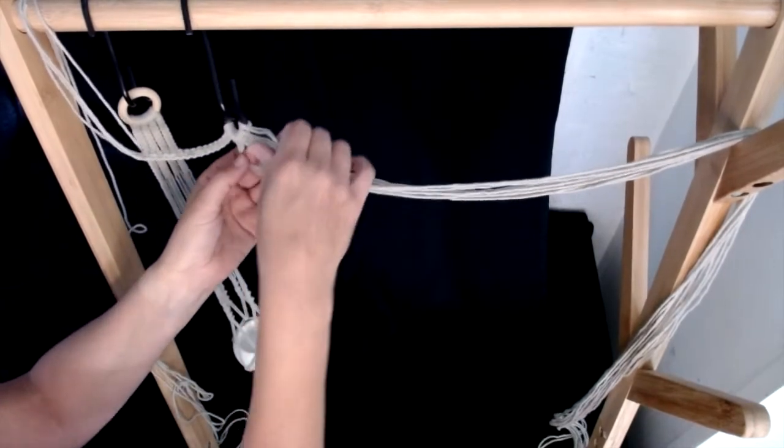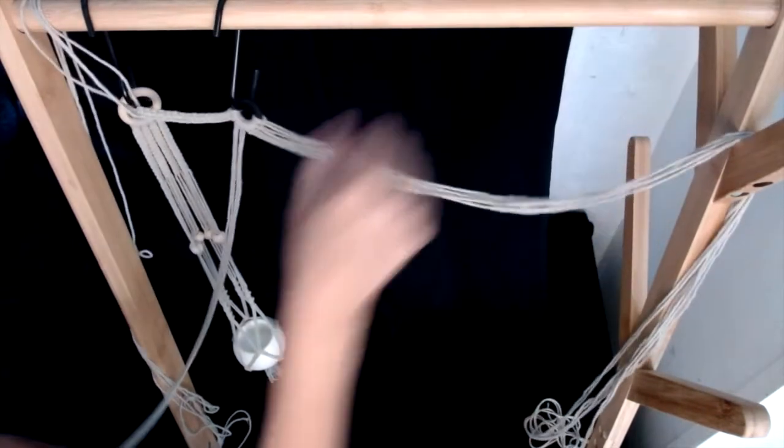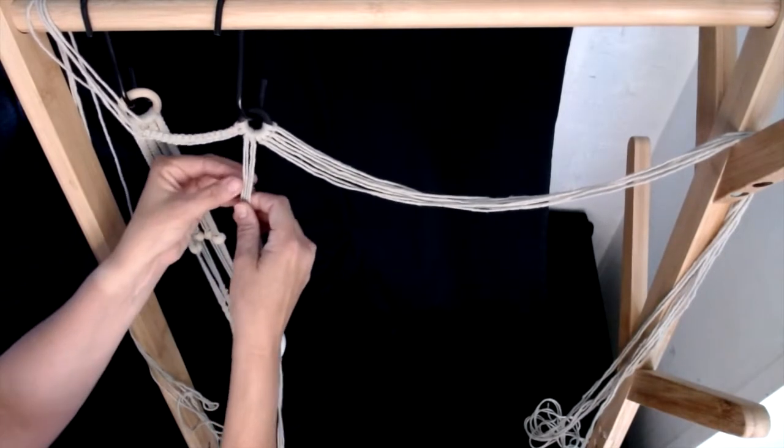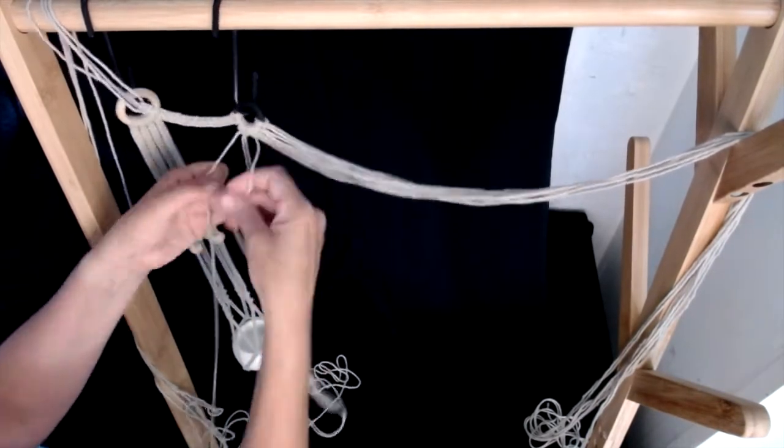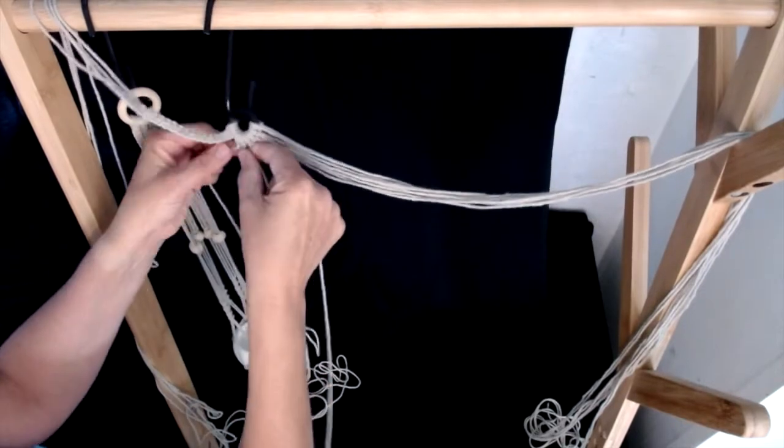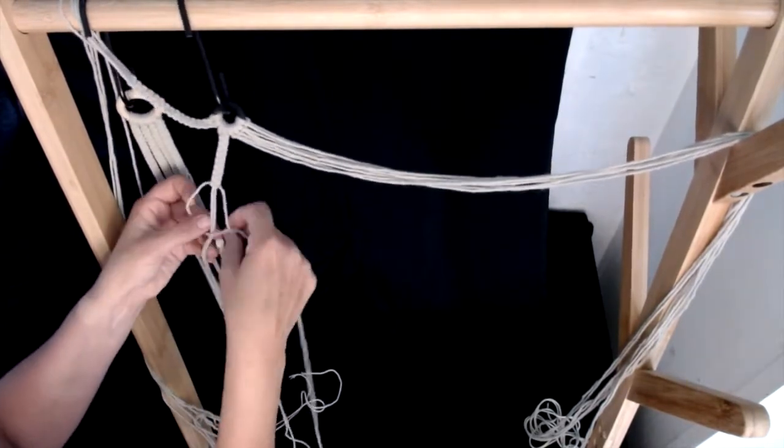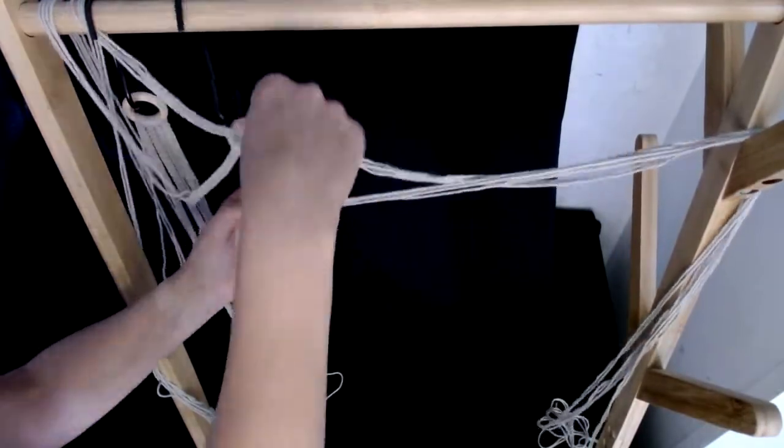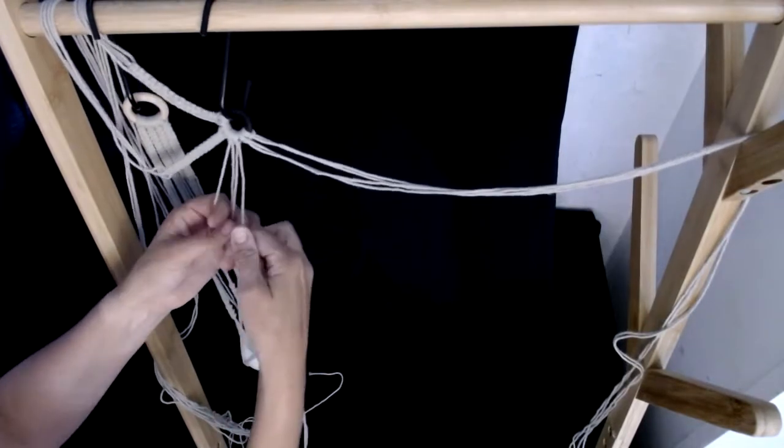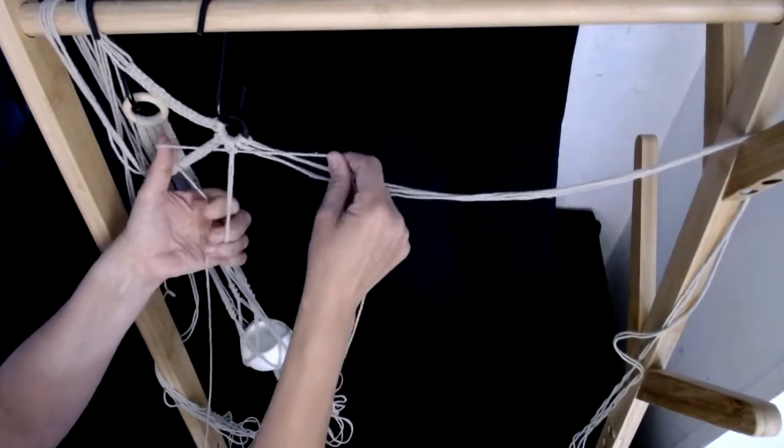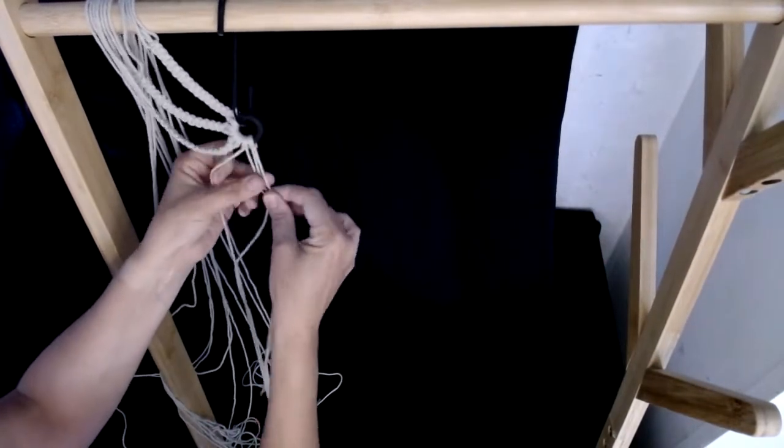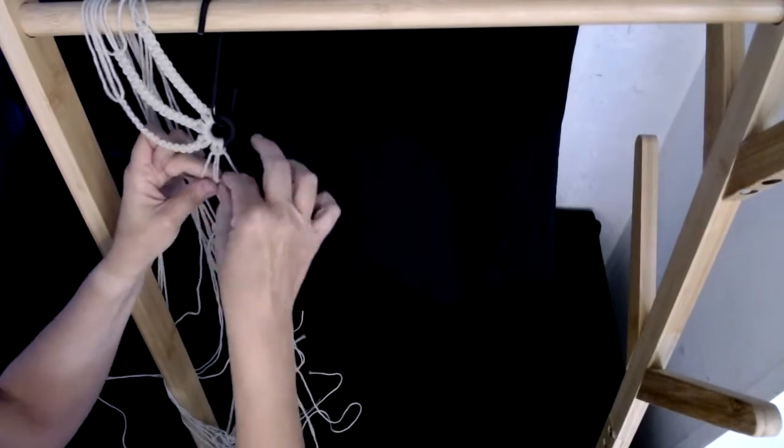Repeat the next four strands and do 15 square knots using these. And grab the next four strands and do 15 square knots using these. And again 15 square knots on the last group of strands.